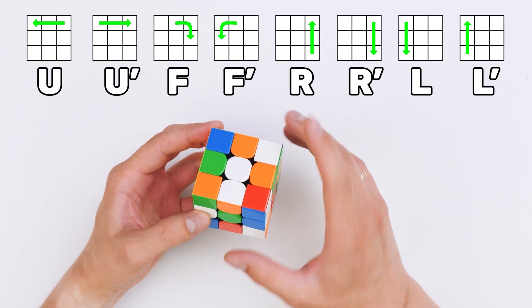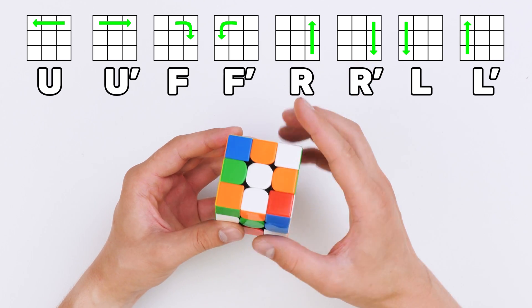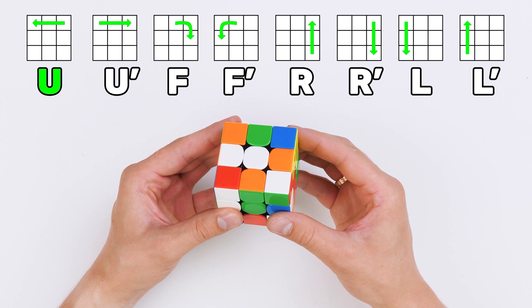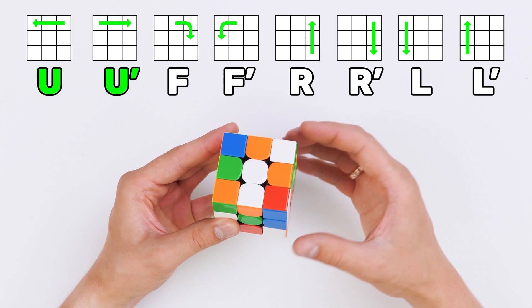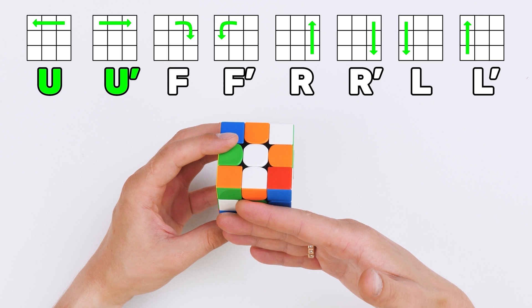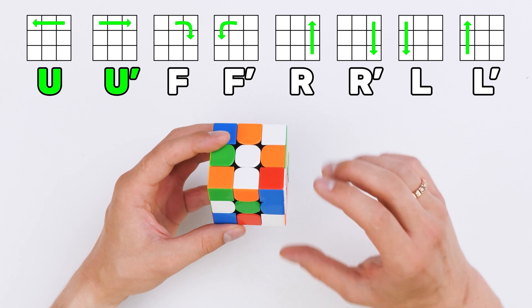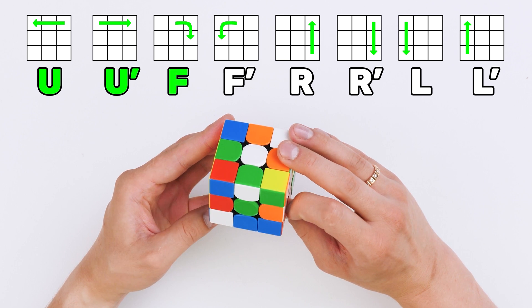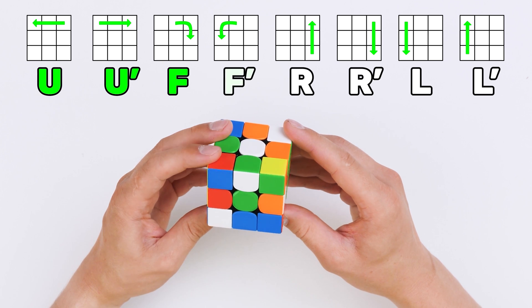Try turning your Rubik's Cube with me. Top face, clockwise, and then counterclockwise. Front face, which is in front of you, clockwise and counterclockwise.